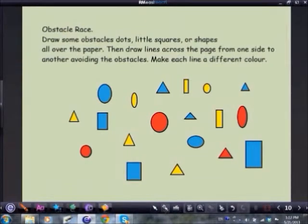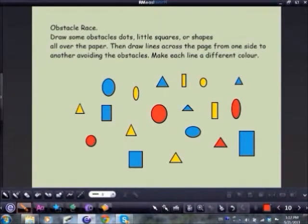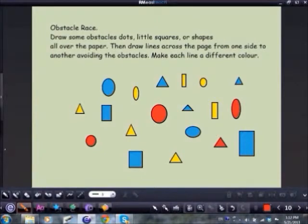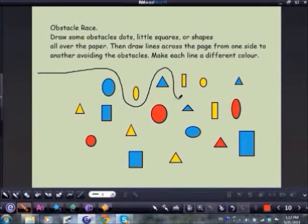Now the exciting bit is actually drawing a continuous line from one side of the page to the other, avoiding the obstacles, and make each line a different color. So I'm going to come across to the pen tool and choose a pen. So let's do it in black to start off with. And then you could get one of the students to come up and have a go. So first go. Let's start there. There we are, there's my first line.